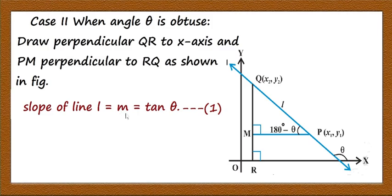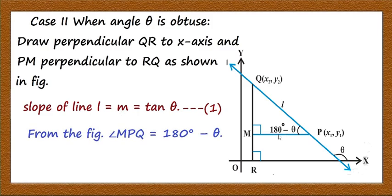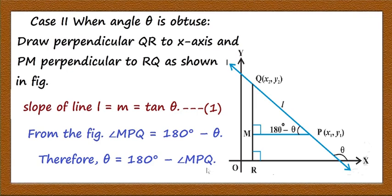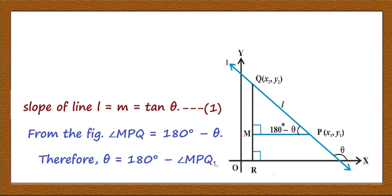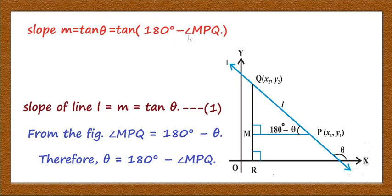We have slope m = tan theta. From the figure, angle MPQ = 180 - theta. Therefore, theta = 180 - angle MPQ. So slope m = tan theta = tan(180 - angle MPQ). And tan(180 - x) = -tan x, because it is in the second quadrant where tan is negative.